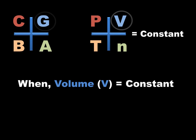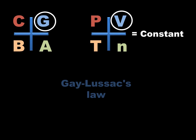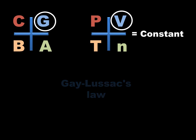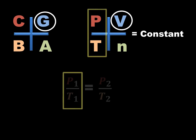When volume V is constant, this process is governed by Gay-Luzak's Law. P is directly proportional to T, and the equation is P1 by T1 equals P2 by T2.